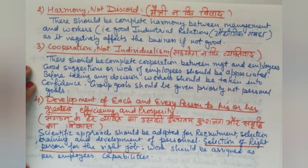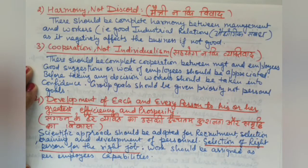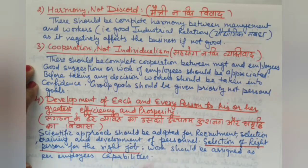Training must cover the latest methods used in the business. Training and development should be a continuous process — workers should not be left without development. They must be trained using scientific methods so that they can contribute fully to the organization's objectives.